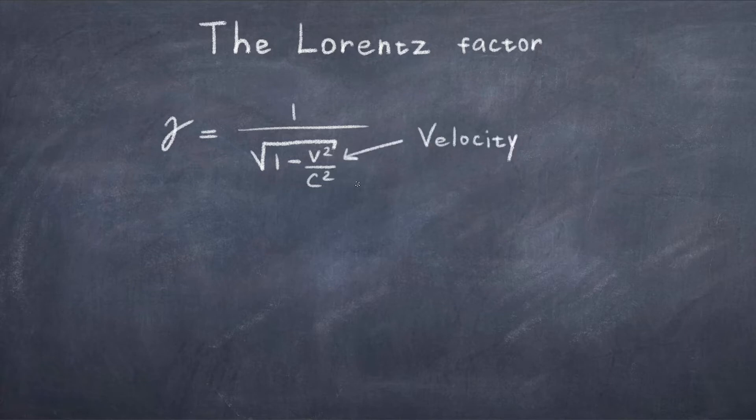If we take a look at this formula, we notice two important things. Firstly, if the velocity is much smaller than the speed of light, then the Lorentz factor becomes just 1. This is the limit where the world works just like how Newton described it. In this case, the effects of relativity are negligible.